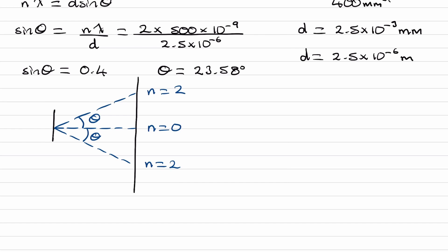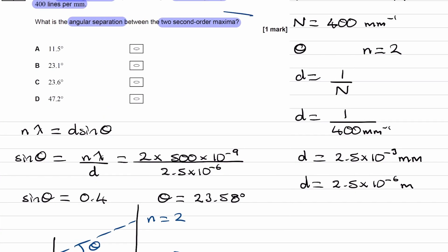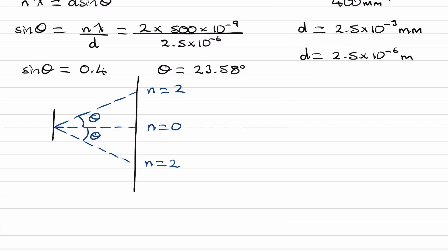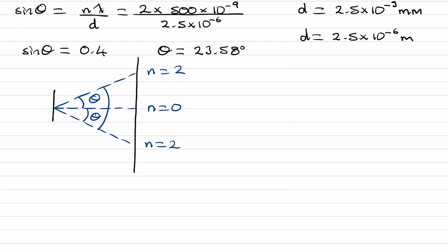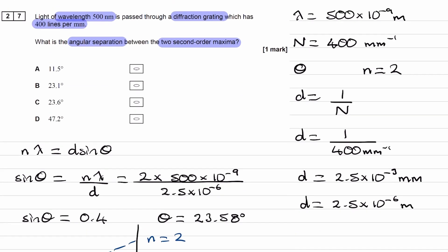To work out the angle we need, the angle between the two second-order maxima, that's this entire angle here, which is two times 23.58, giving 47.2 degrees. Therefore, our answer is D.